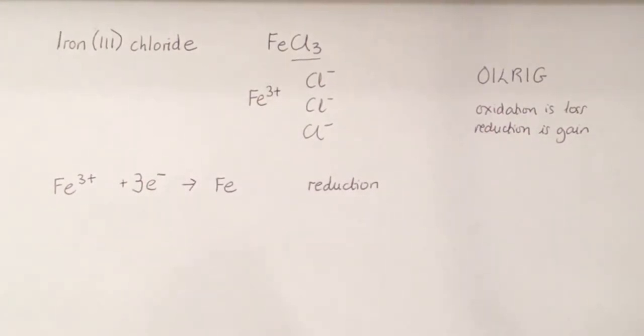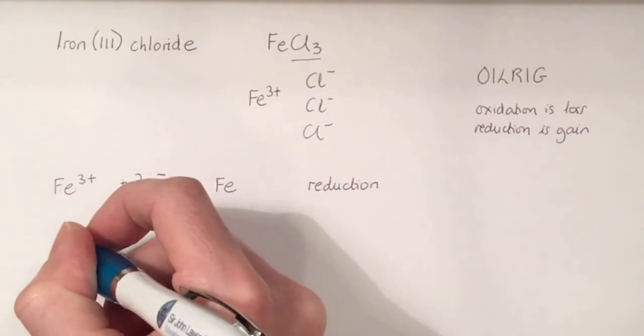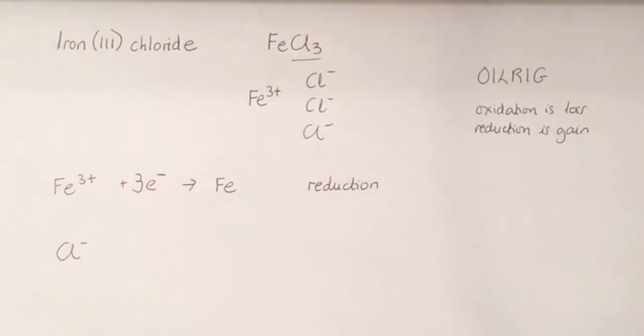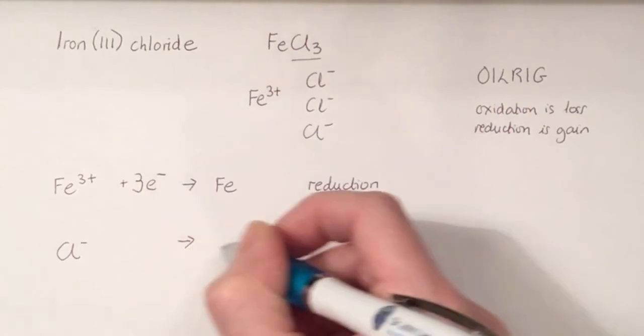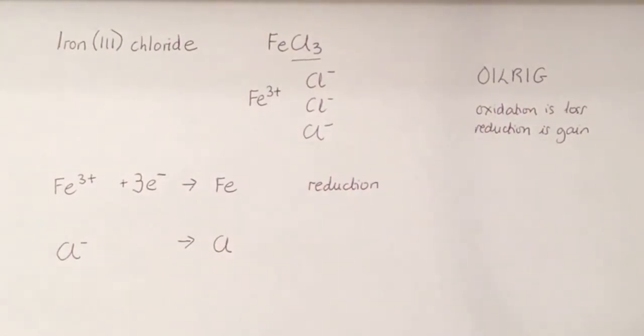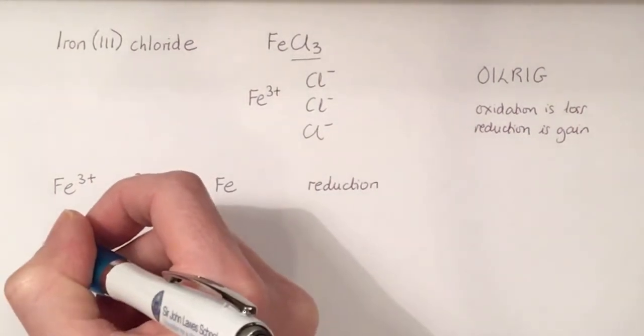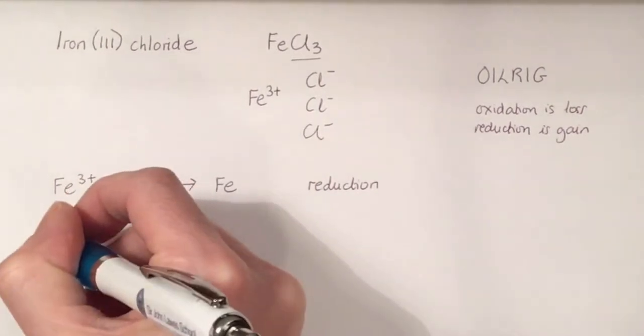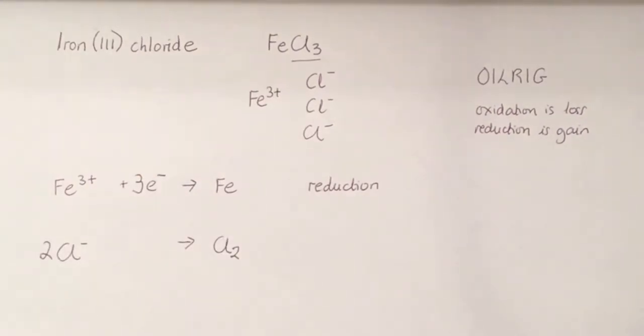If we look at our chloride here, that's going to turn from an ion into an atom. But chlorine atoms never go around by themselves. They always go around in pairs. So you always get Cl2. And because we've got two chlorines on this side, we need to make sure we've got two chloride ions on that side.